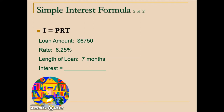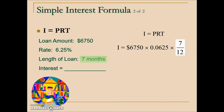In the next example, they give information about a loan and ask us to calculate interest. We replace the principal with the loan amount and the rate as a decimal. In this case, the time is given in months. The formula requires time in years, so since there are 12 months in a year, we express the length of the loan as 7/12. Multiply by 7 and divide by 12. The final answer is $246.09. Since this is money, always round to two decimal places.